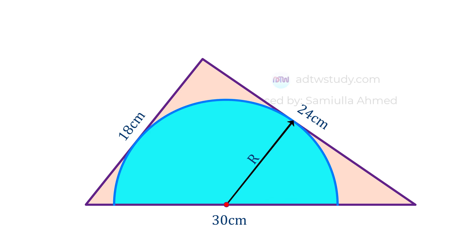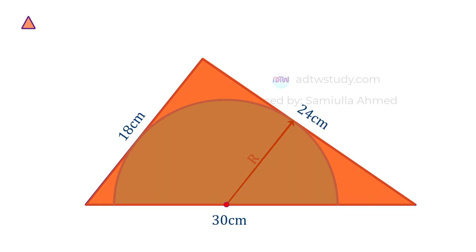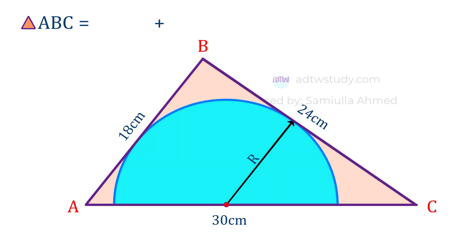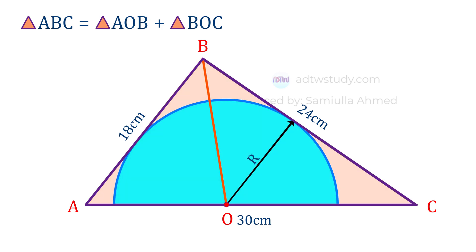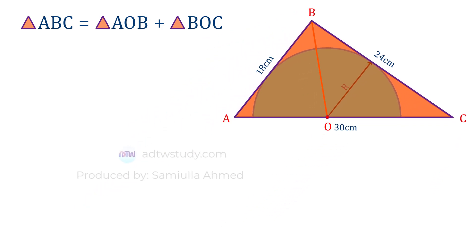To find this, we need to find the area of the bigger triangle ABC and then equate this area with the summation of the two smaller triangles AOB and BOC. By doing this we can find out the radius of the circle.